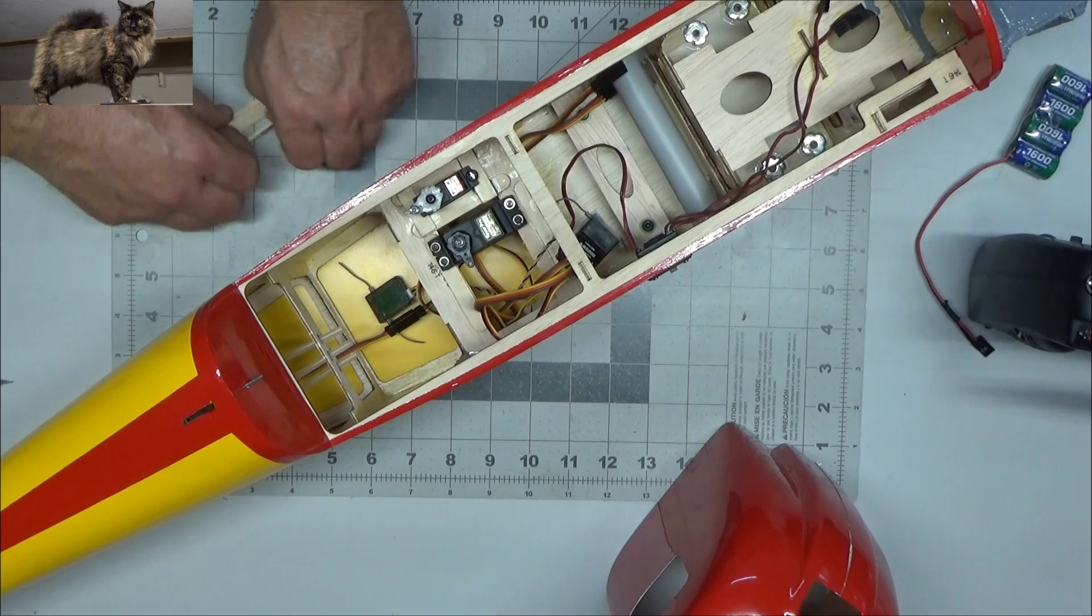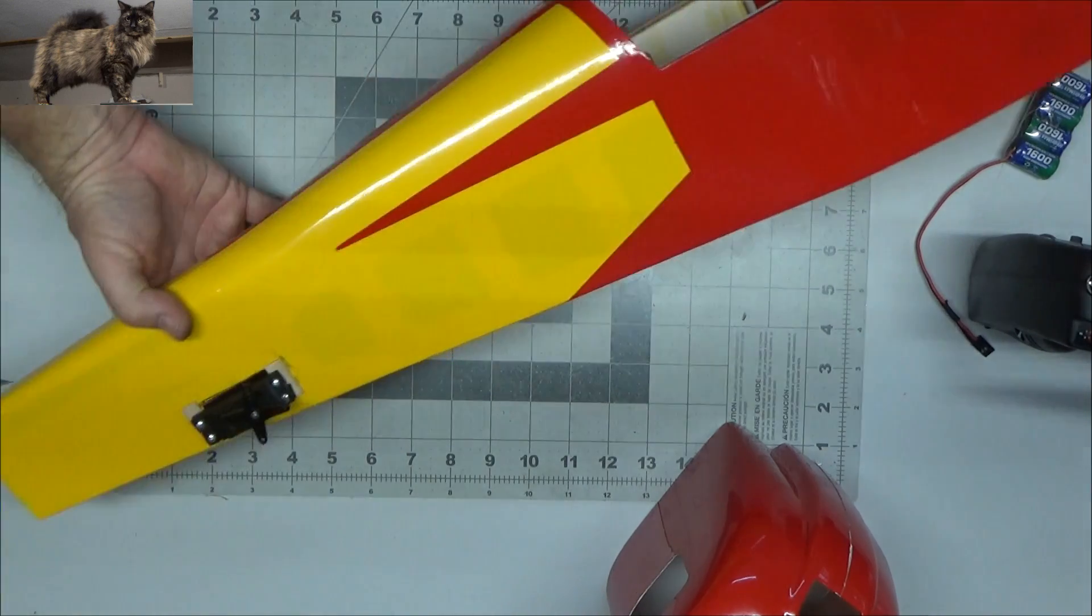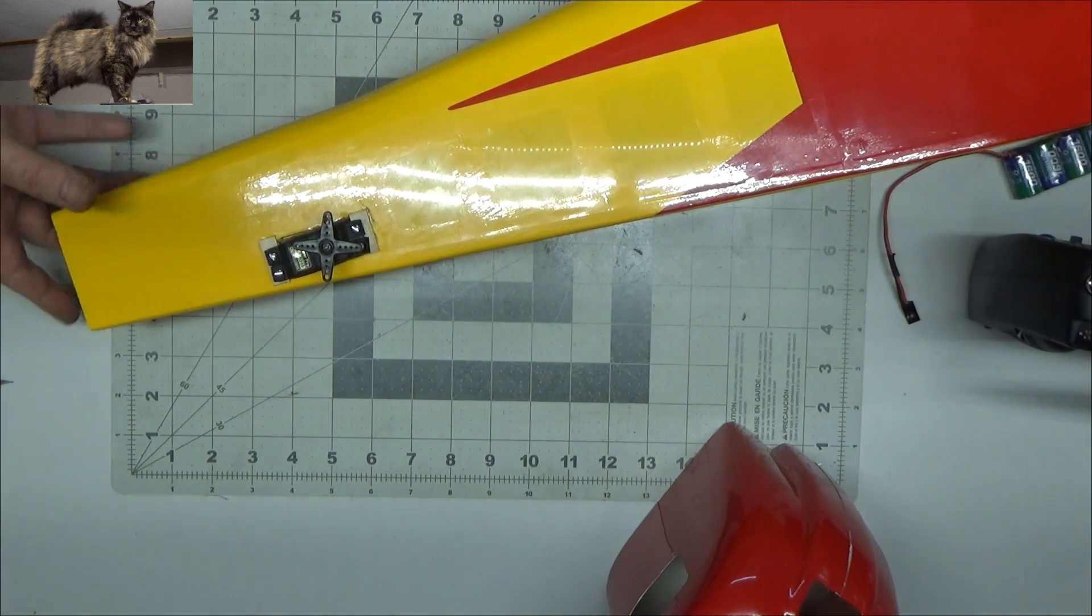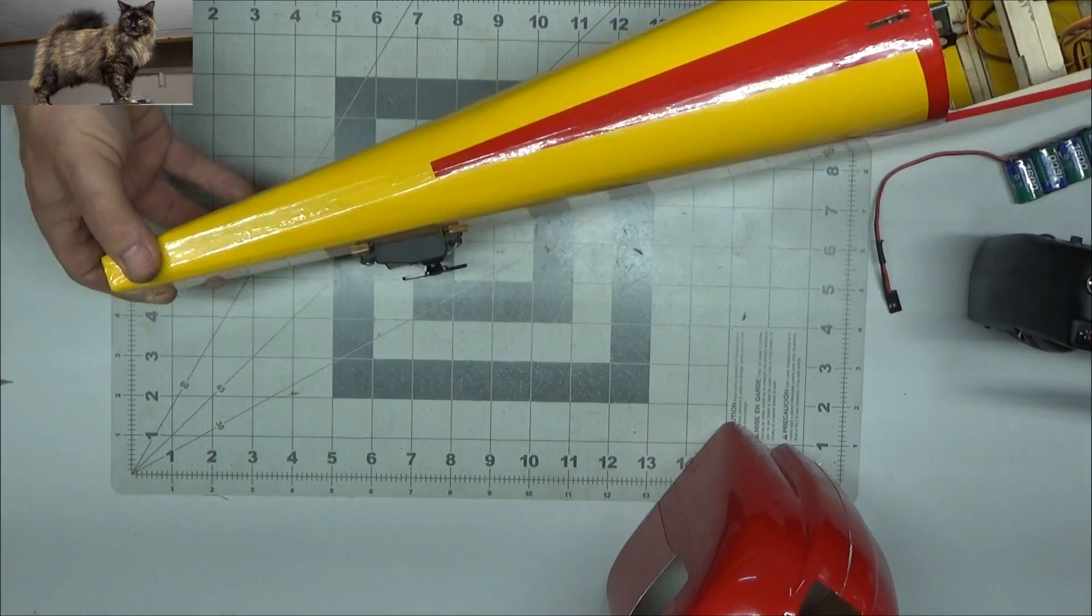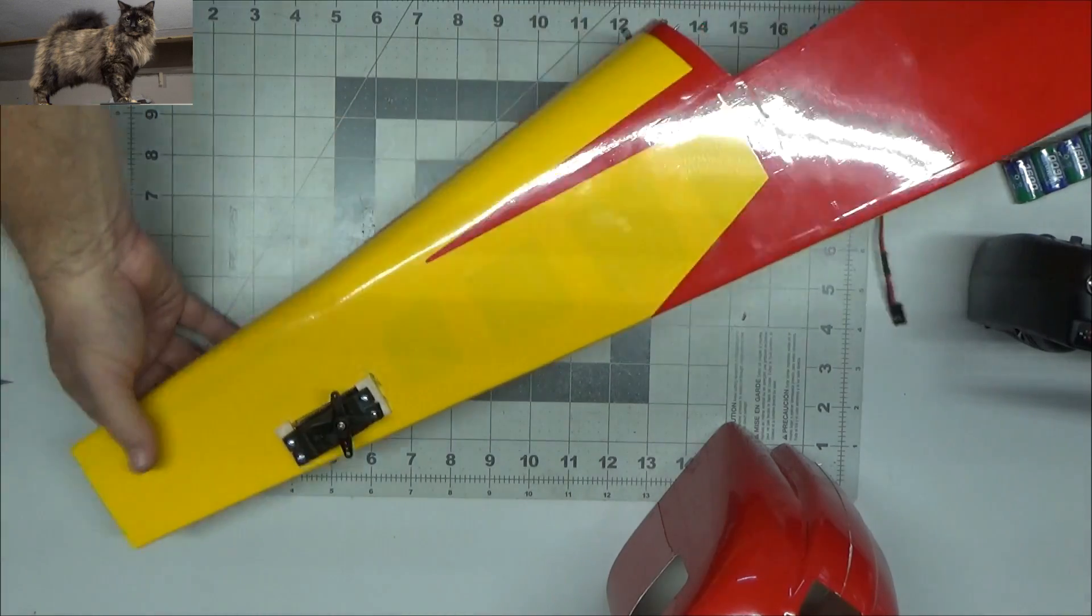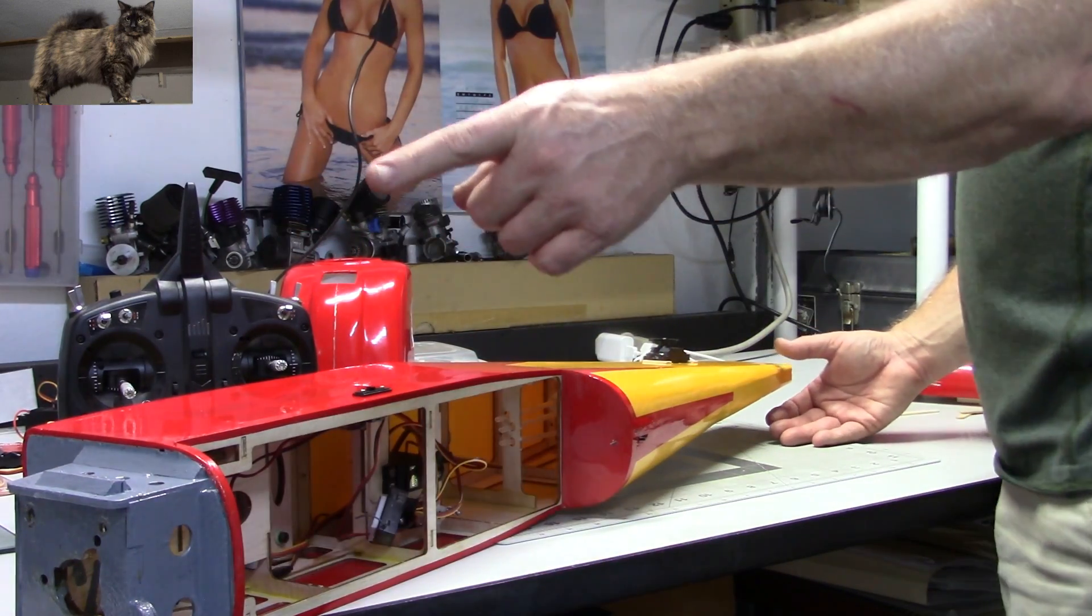The other thing I did was I put my rudder servo here in the back, and as you can see it kind of sticks out, it looks kind of gaudy, but oh well. If anybody's staring at the ass end of the plane, they should be staring at the front where the engine is.